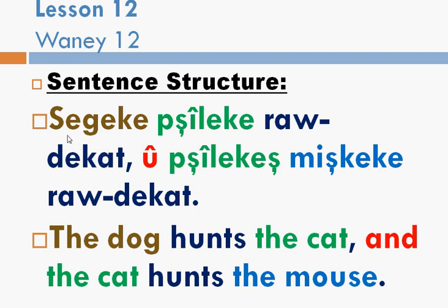Look at the first word: Sagaka. Sagaka is one word but if you translate to English it will be 'the dog', which would be two words. Sagaka. Pshilaka means 'the cat'. Raudakat means 'hunts'. So the first part of the sentence, Sagaka Pshilaka raudakat, would literally be 'the dog, the cat, hunts'. In Kurdish the verb goes to the end.